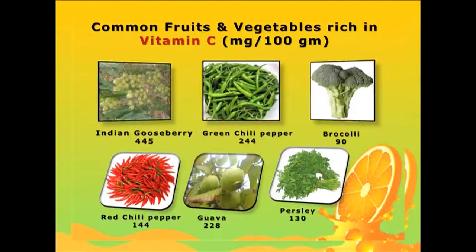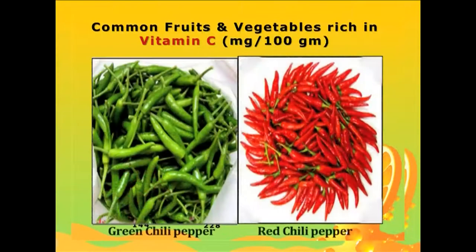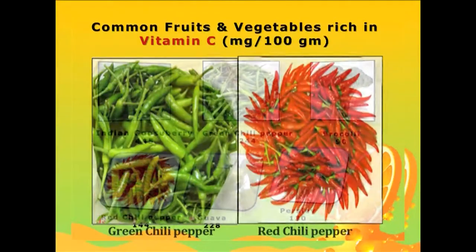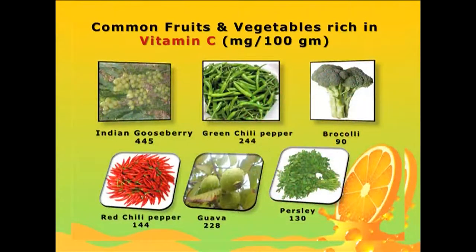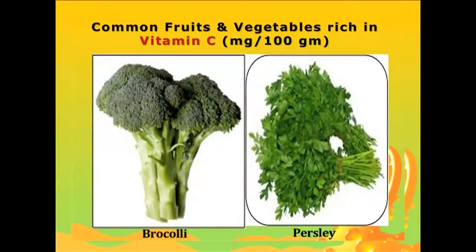Guava contains 228 milligrams per 100 grams, while green and red chilli pepper contain 244 and 144 milligrams per 100 grams respectively. It is worth mentioning that although chilli is not native to India, presently India is the highest producer of green and red chilli pepper in the world. Broccoli and parsley are also now available in plenty in Indian markets.